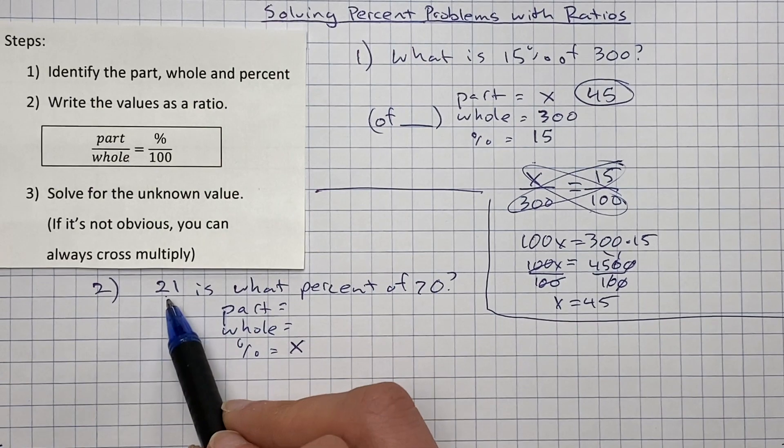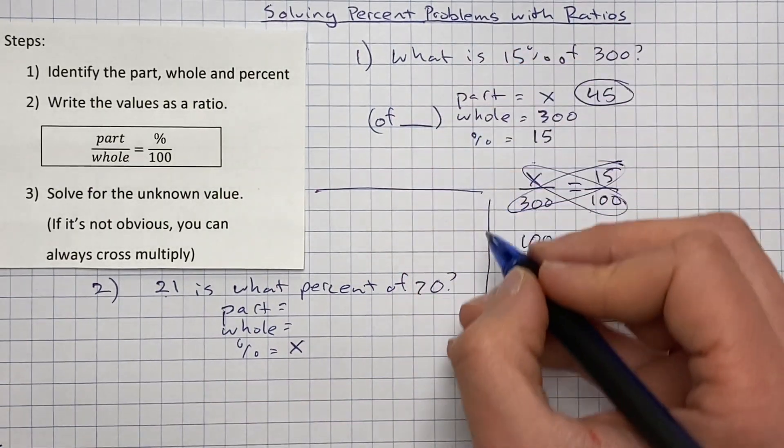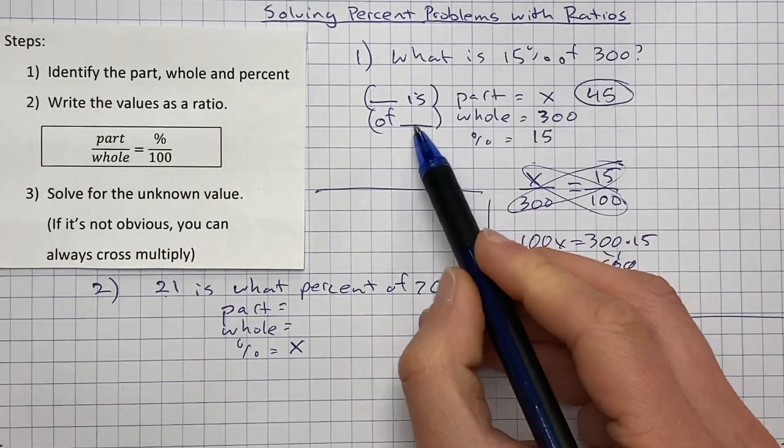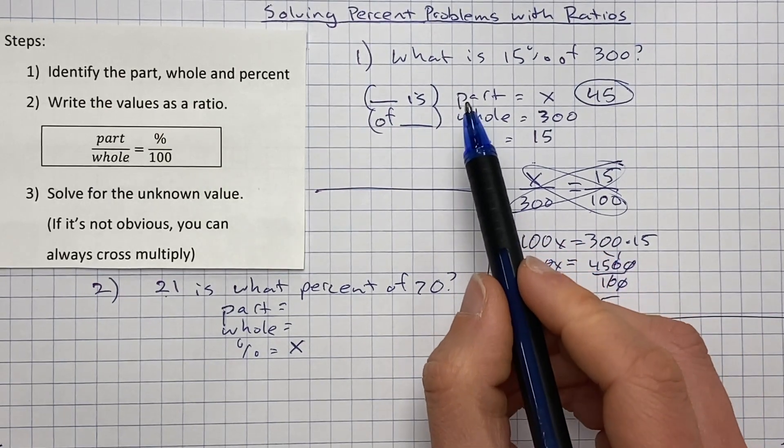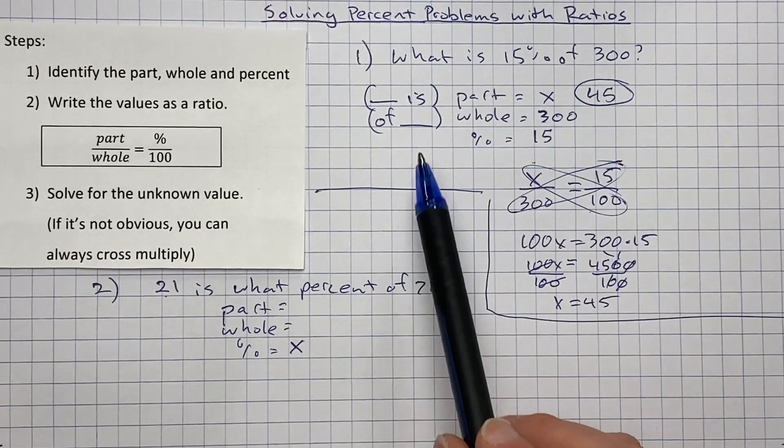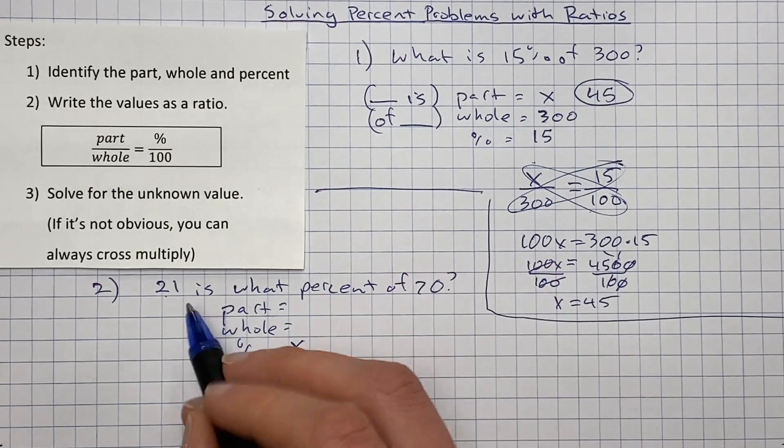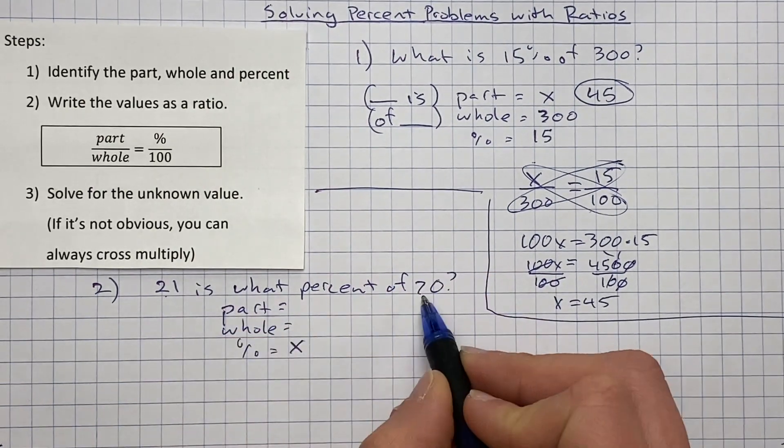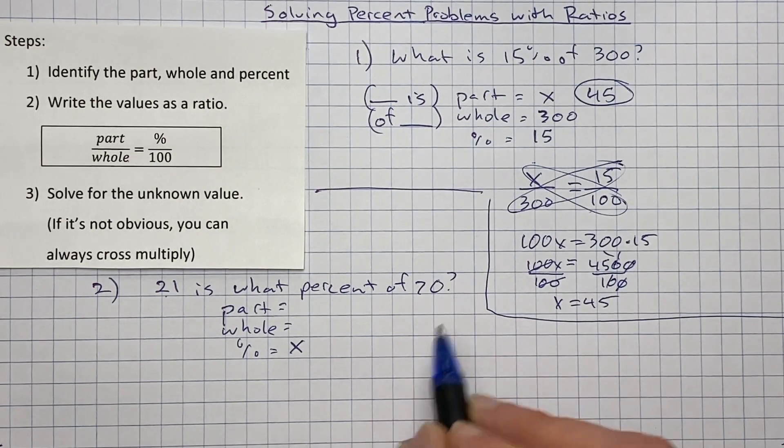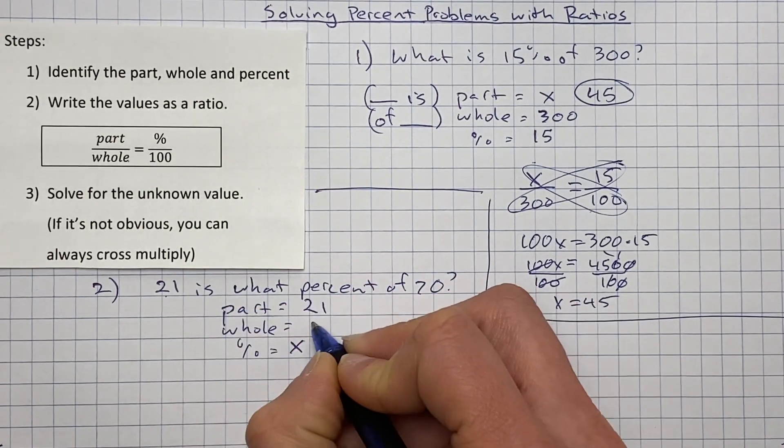There is also a clue sometimes next to the part. And that is the word is comes after that number. So if you see blank is, there's a decent chance that that might be the part. Now, this is not always going to be the case. The word is is used all the time. However, if you're looking at a percent problem and you see a number followed by the word is, there is a chance that that is the part. Also, usually the part is going to be smaller than the whole. Now, that's not always the case. Your percent could be bigger than 100%. But those are some clues for identifying what's what. So our part is 21, our whole is 70.